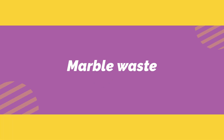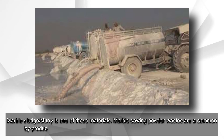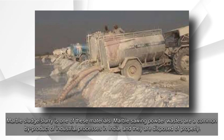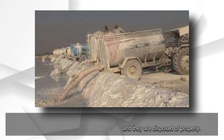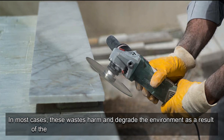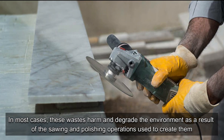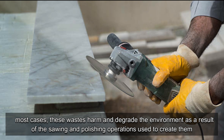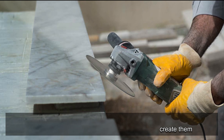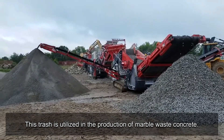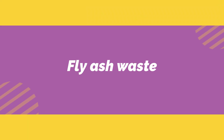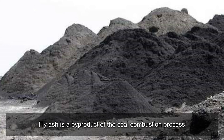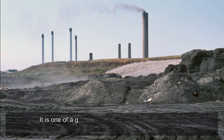Marble waste: marble sludge slurry is one such material. Marble sawing powder wastes are a common by-product of industrial processes in India and are disposed of in most cases. These wastes harm and degrade the environment as a result of the sawing and polishing operations used to create them. This waste is utilized in the production of marble waste concrete.